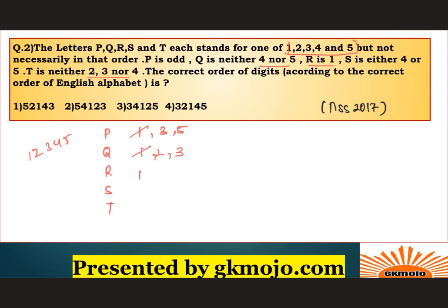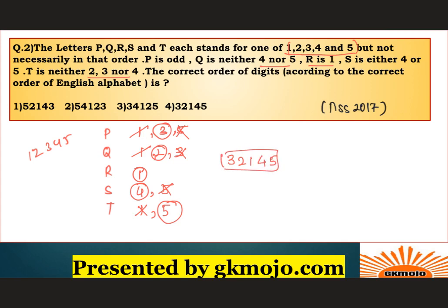Since R is 1, P and Q cannot be 1. S is either 4 or 5. T is neither 2, 3, nor 4, so T can only be 1 or 5. But R is already 1, so T must be 5. Since T is 5, S cannot be 5, so S is 4. Five is eliminated for P, so P is 3. Three is now taken, so Q is 2. The correct order P, Q, R, S, T is 3, 2, 1, 4, 5 — which is option 4.